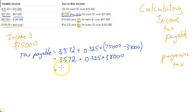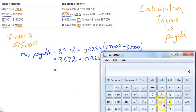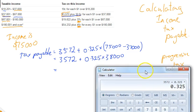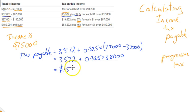And then finally, I can type all of that into my calculator and get an answer. So it's going to be $3,572 plus 0.325 times $38,000.